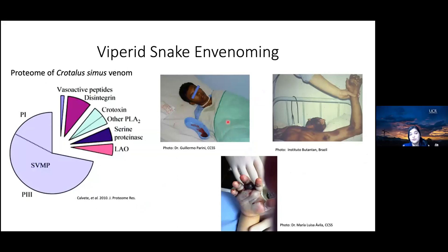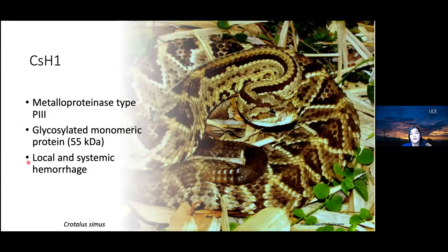Crotalocimus venom has been shown to cause hemorrhage effects. A main component of its complete protein composition are snake venom metalloproteinases, or SVMPs, and these are responsible for hemorrhage. SVMPs are a major component, especially type P3. This study focused on CSH1, which is a type P3 SVMP — a glycosylated monomeric protein of 55 kilodaltons, which causes local and systemic hemorrhage.